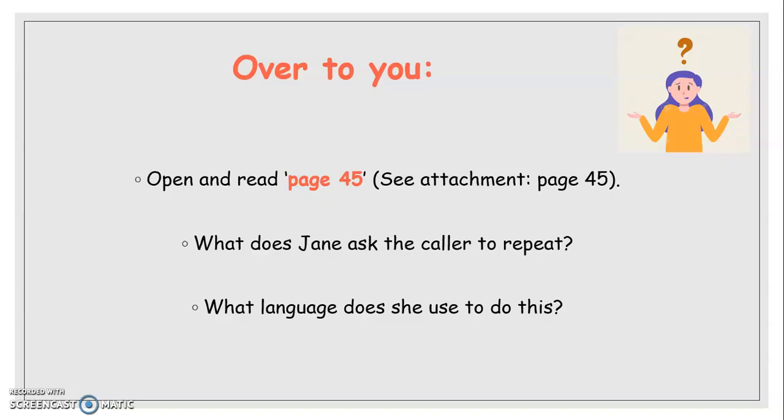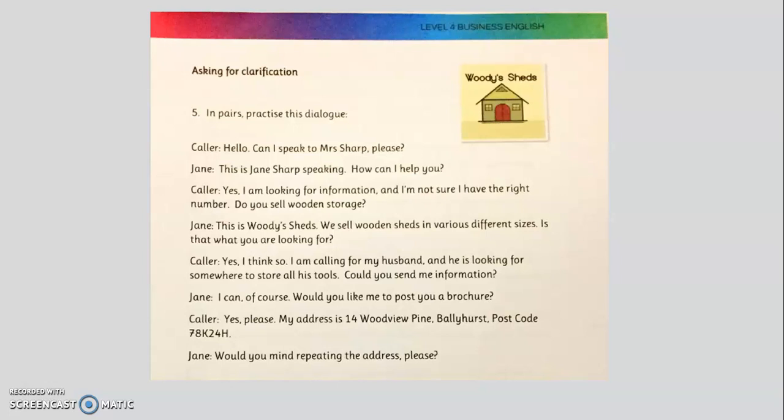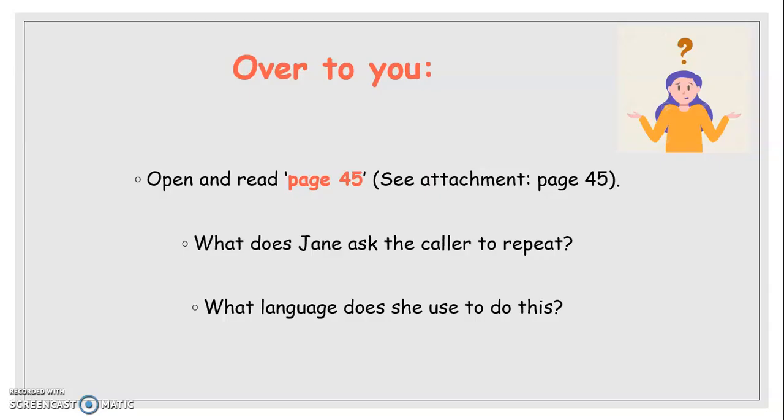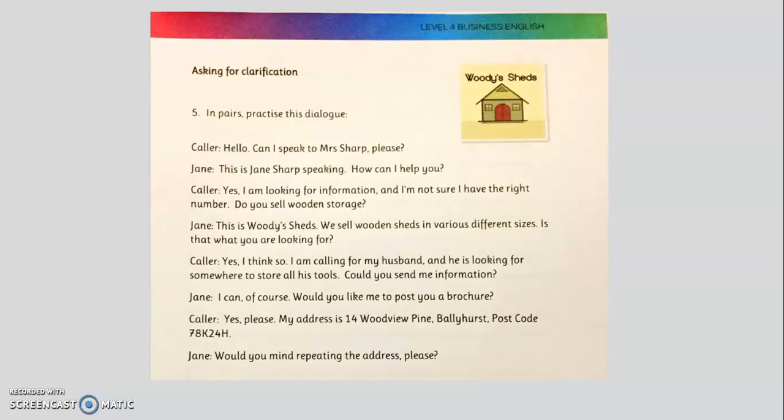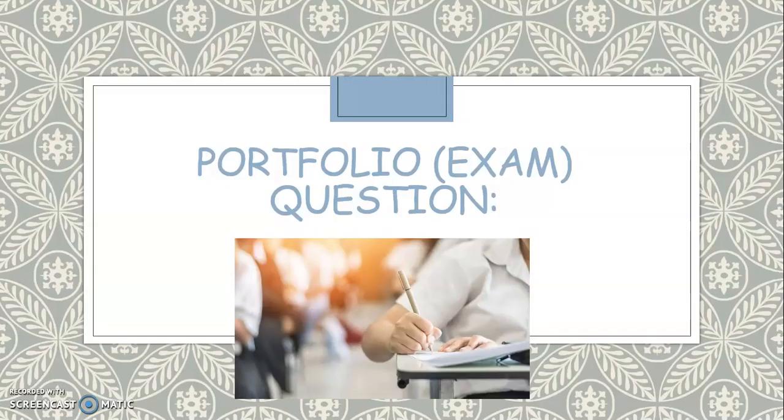But I am just going to move on. So, over to you. Open and read page 45. What does Jane ask the caller to repeat? What language does she use to do this? Well, Jane asks the caller to repeat the address. And what language does she use to do this? Well, she uses formal language. She uses would you mind repeating. And again, that's an example of softening or hedging that we talked about last week.